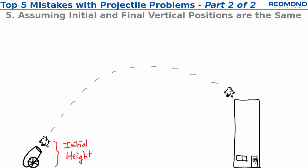Mistake number five is assuming that the initial and final vertical position are the same. Depending on the chicken's initial velocity, the chicken can reach the top of the roof, the middle of the building, or the ground, three very different final heights.